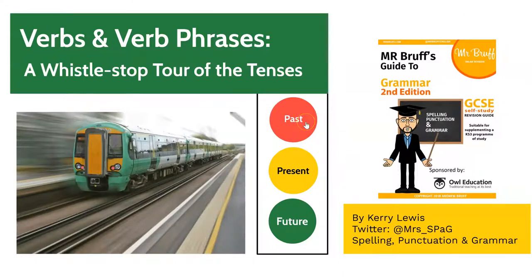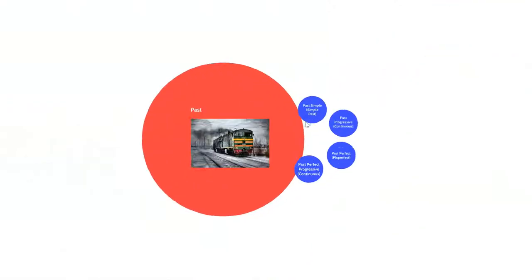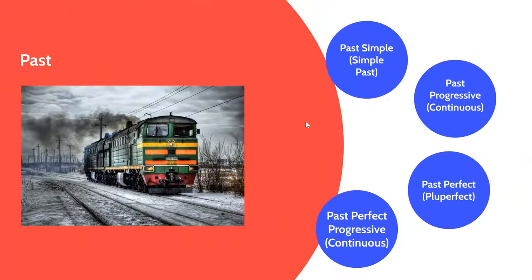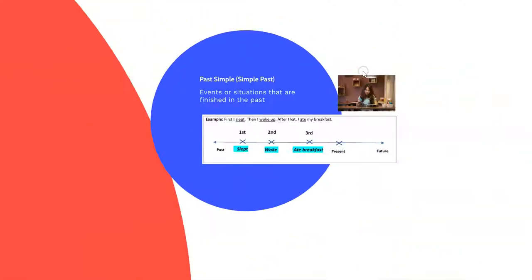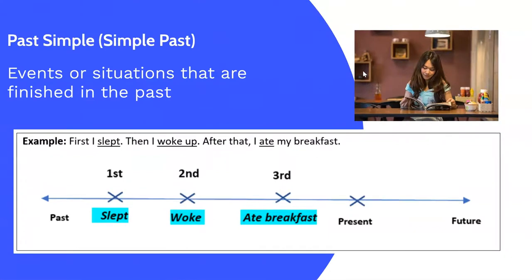Let's begin by looking at how the past tense subdivides. There are four past tenses, and the first is the past simple tense, also known as the simple past tense. We use the past simple tense to talk about events or situations that have finished in the past. For example, first I slept, then I woke up, so we know that this first action here now is finished.